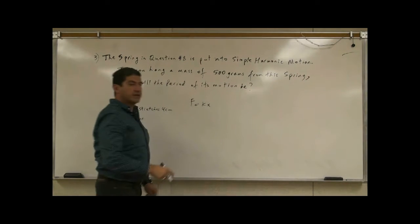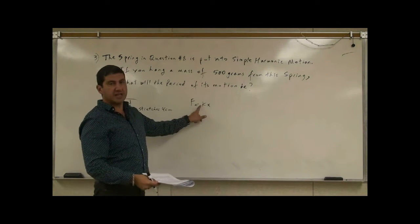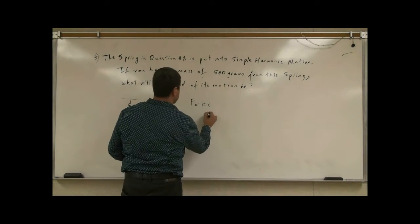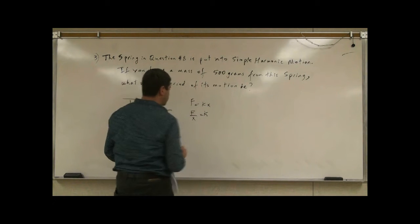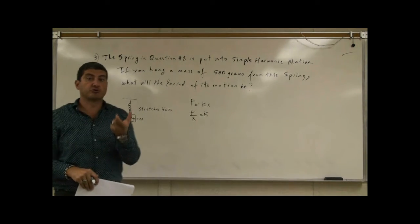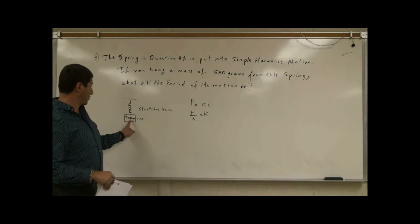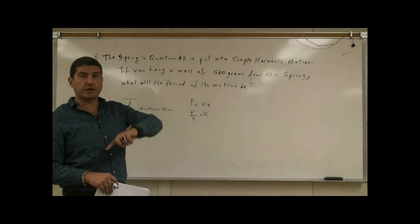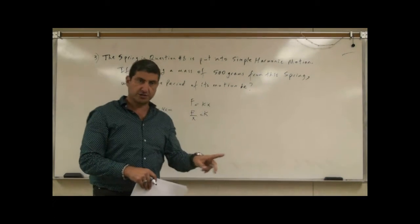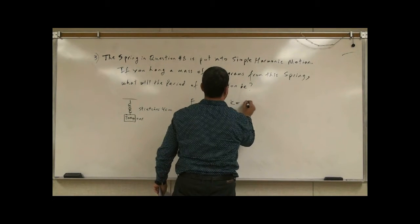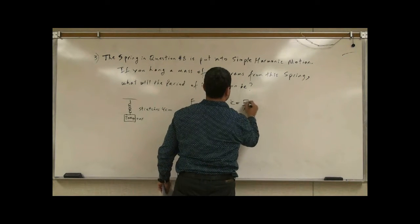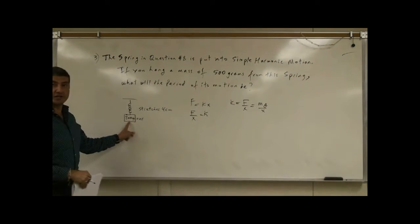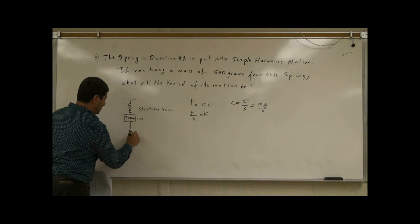So what would its spring constant be? We use Hooke's Law: F equals kx. I'm not focusing on the negative of Hooke's Law, just the absolute value. The spring constant k is equal to F over x, where x is the amount of the stretch. What is the force here? Well, we have to convert the mass into kilograms, and then from kilograms convert into newtons. So k is equal to F over x, and F equals mg over x. mg is the weight of this mass.